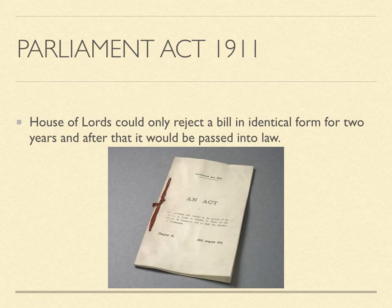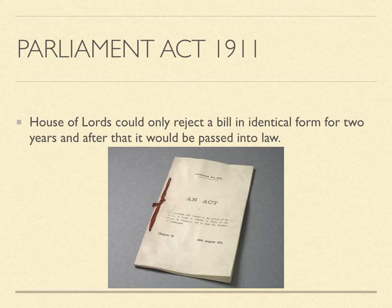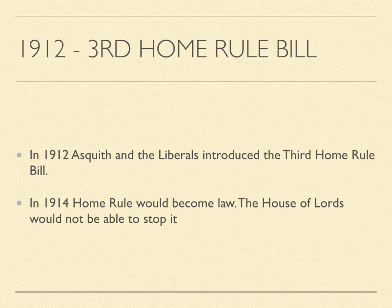Asquith had gone to King George V and asked that if the House of Lords rejected the act, the King would grant peerages to hundreds of Liberals to even out the House of Lords. The King was able to appoint people to the House of Lords, and if there was one thing the Lords valued more than their power, it was their status — they did not want commoners in the House of Lords. With the Parliament Act passed, Asquith and the Liberals introduced the third Home Rule Bill in 1912, which meant that in 1914 Ireland would get Home Rule.